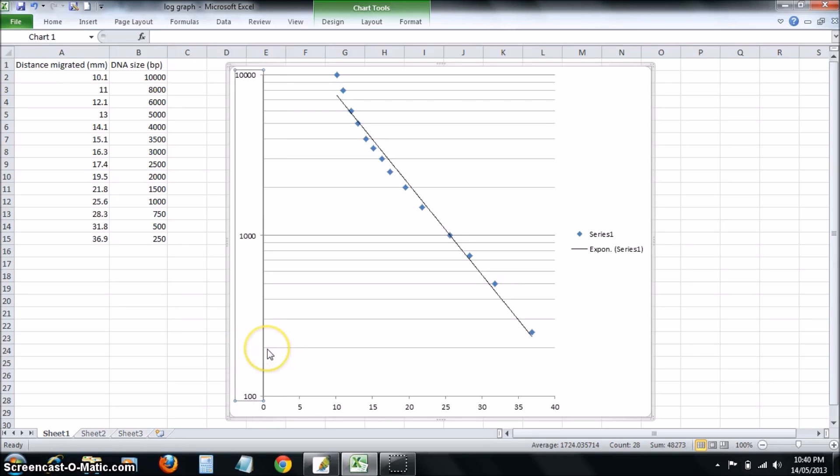This line is 200 base pairs, 300, 400, 500, 600, 700, 800, 900, and 1000. Then 2000, 3000, 4000, and so on. It's a logarithmic relationship.